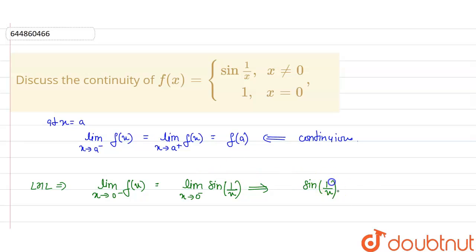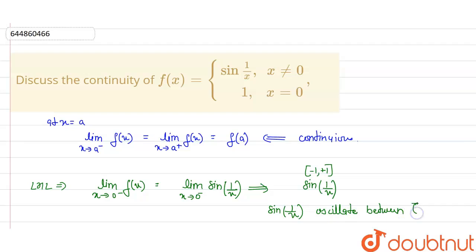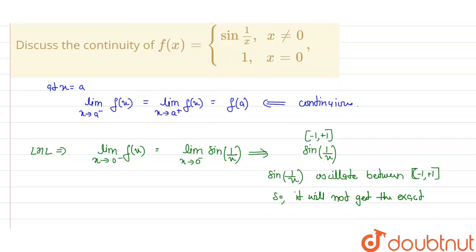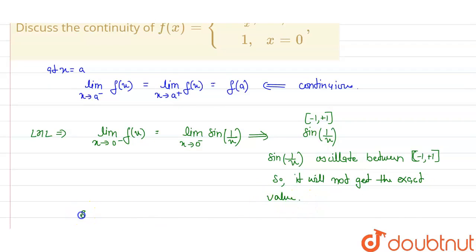Here, sine(1/x) oscillates between minus 1 to plus 1, so it will not get an exact value. The same happens in the RHL case as well.